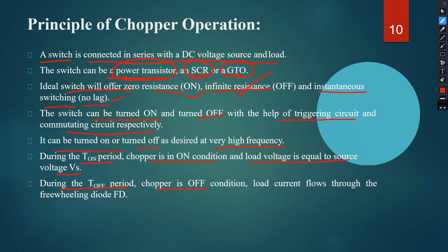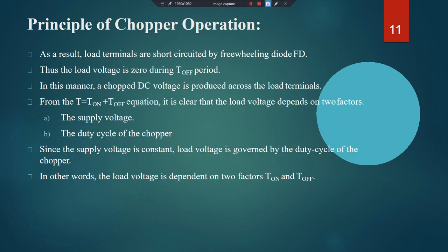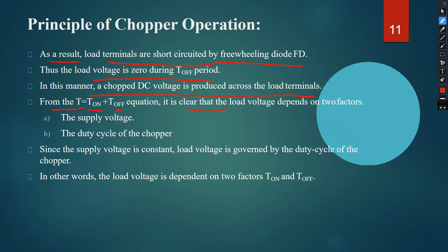During the T_on period, the chopper is in on condition and load voltage equals the source voltage Vs. During the T_off period, the chopper is in off condition and load current flows through the freewheeling diode Fd, short-circuiting the load terminals. Thus load voltage is zero during T_off. In this manner, a chopped DC voltage is produced across the load terminals, dependent on the supply voltage and the duty cycle.